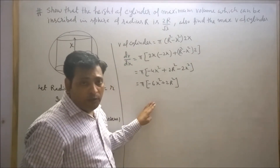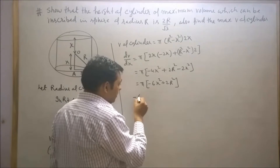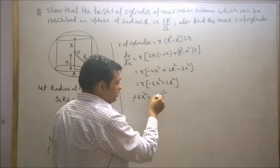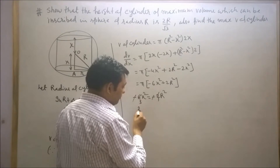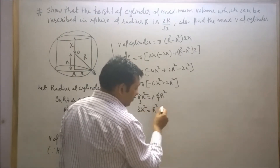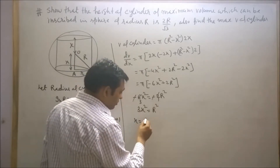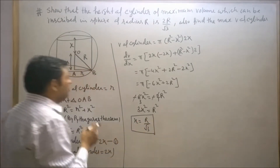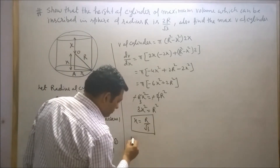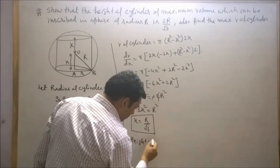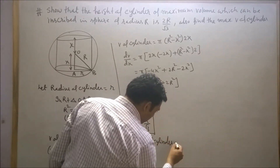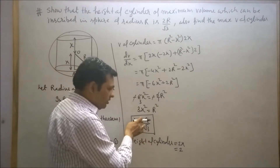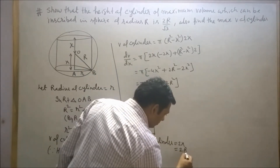Now find the critical point. Setting dV/dx equal to zero: minus 6x² equals minus 2R². The negatives cancel. Dividing both sides by 2 gives 3x² equals R squared. Therefore x equals R upon root 3. So the height of the cylinder equals 2x, which in terms of capital R is 2R upon root 3. Hence we have proved the height of the cylinder equals 2R upon root 3.